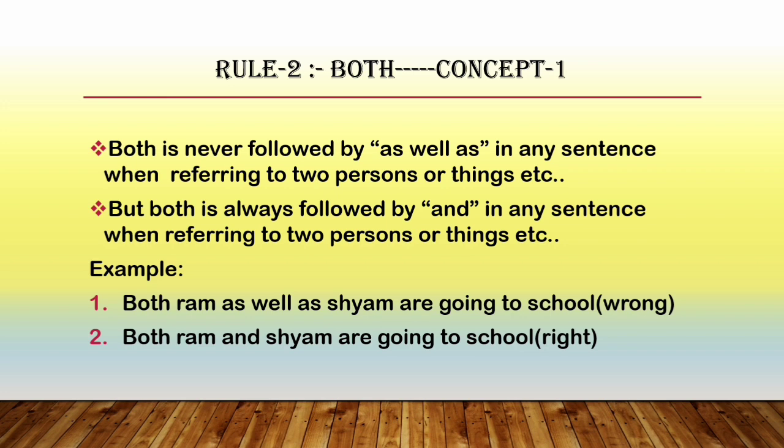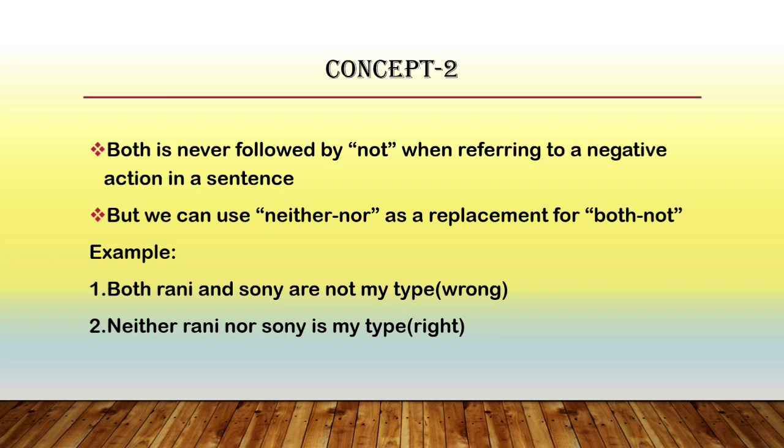To understand this concept, I have given two examples. In the first one you can see: 'Both Ram as well as Shyam are going to school.' As we know, 'both' should never be followed by 'as well as', so this sentence is wrong. To correct it, we use 'and', as shown in example two: 'Both Ram and Shyam are going to school.' This is the first concept of the second rule.